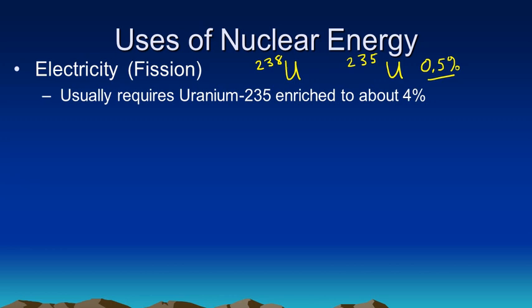It bumps up the ratio from 0.5% to about 4%. When you have about 4% of your uranium-235 atoms present, then you can actually use that for nuclear power.